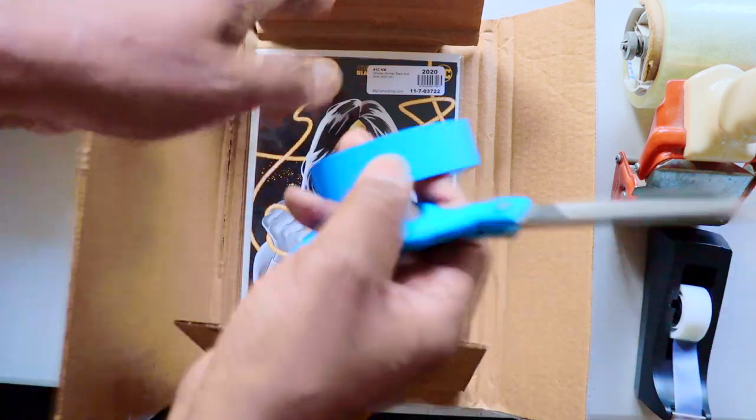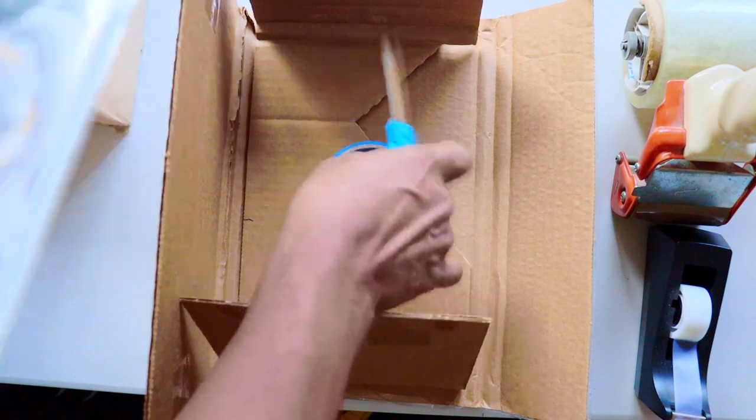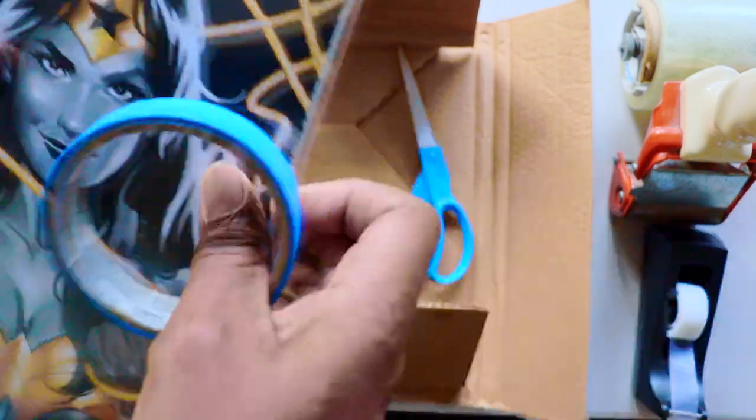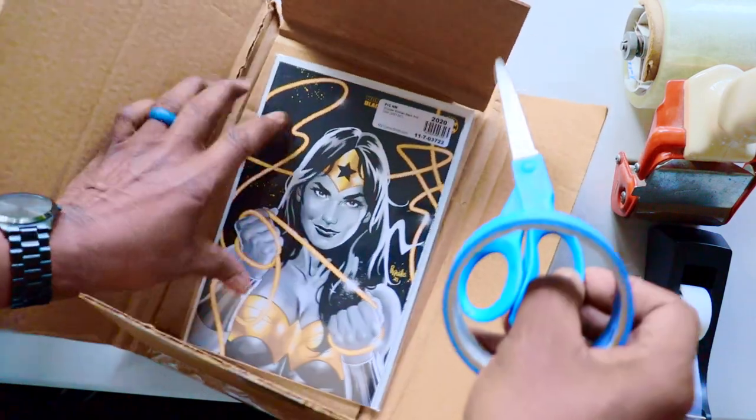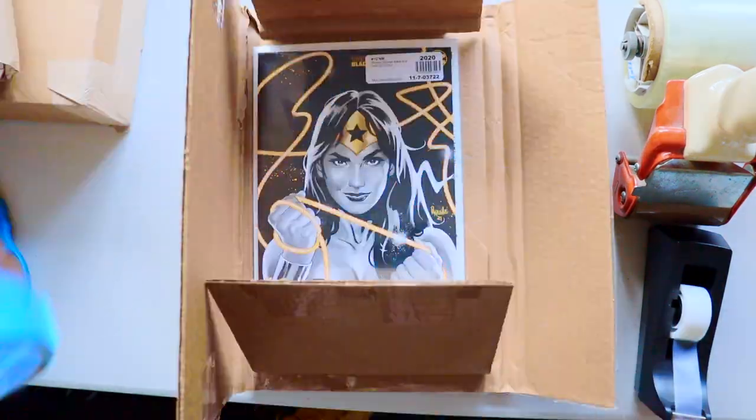Cut four pieces. If I was using more books, if I was shipping more than one book, I would need to secure them together somehow with this painter's tape, the low-tack tape of some sort, and then tape them into the Gemini mailer. Okay, so I've cut my tape now.